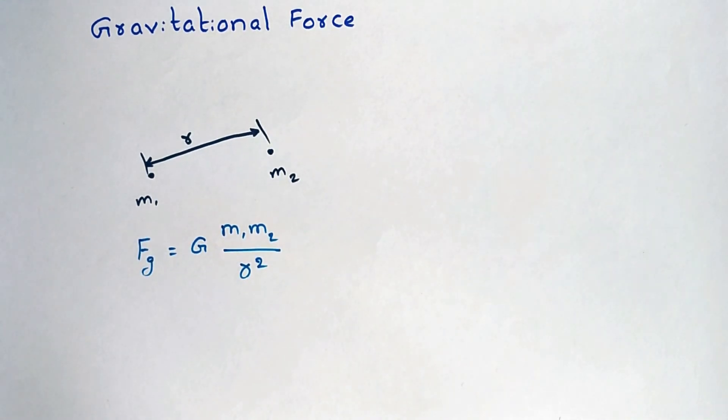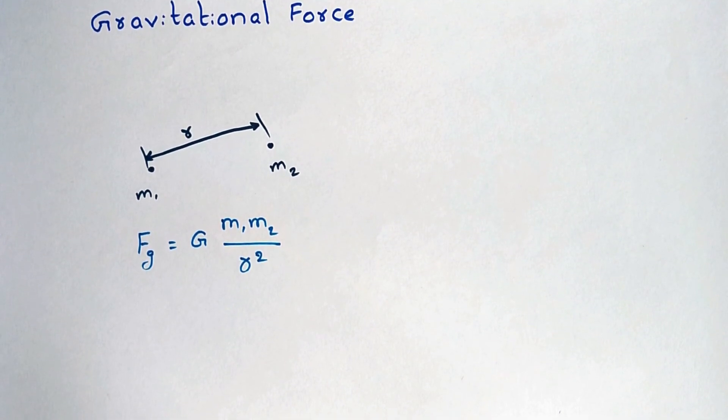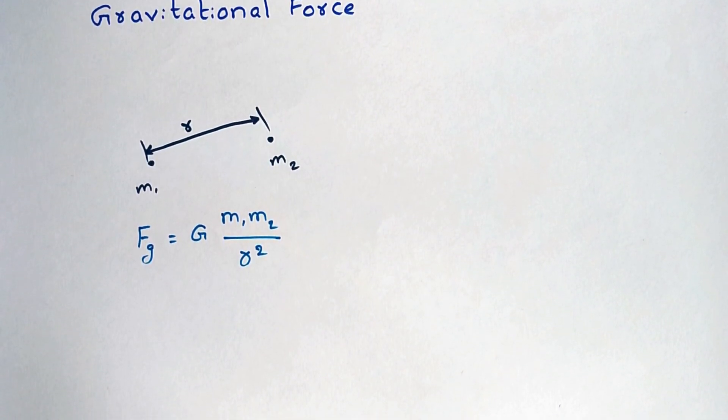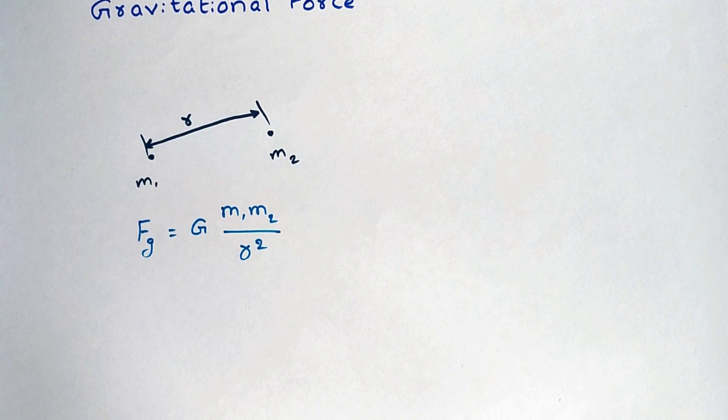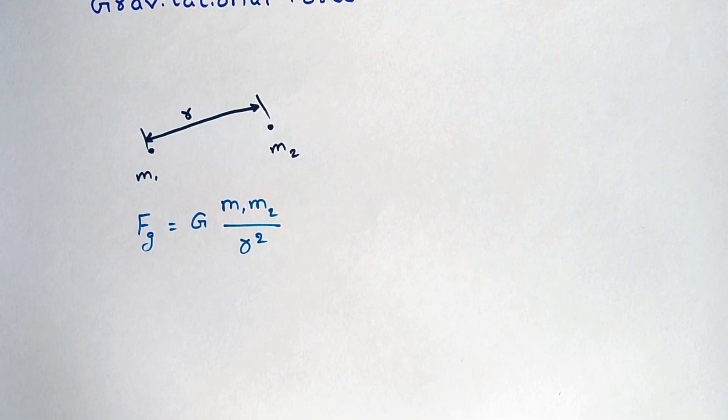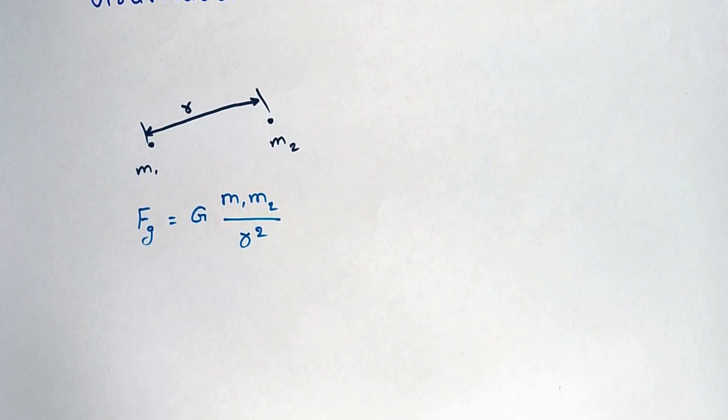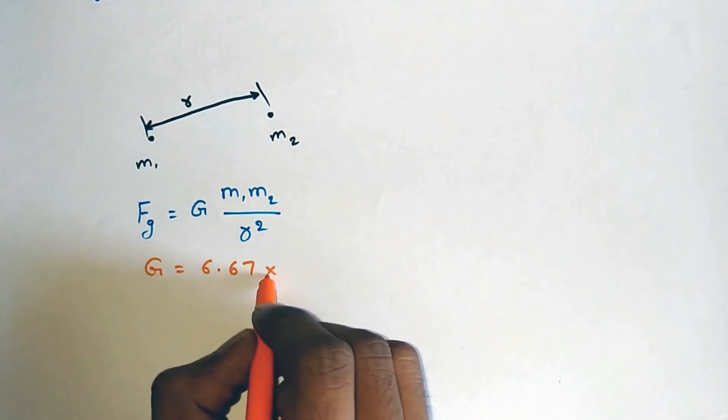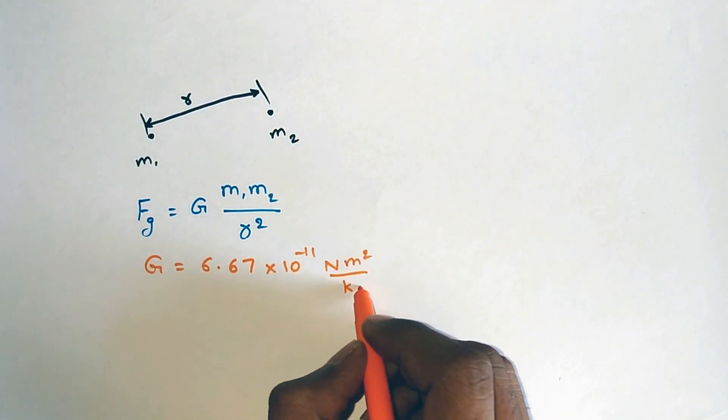From this relation we can say that heavier mass will exert more amount of gravitational pull and the constant G is called as universal gravitational constant which means its value is same anywhere in the universe which is equals to 6.67 times 10 power minus 11 newton meter square per kg square.